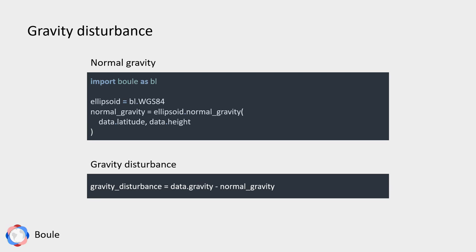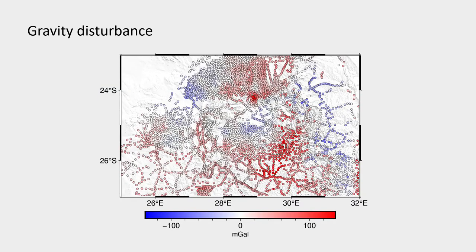The first step in this workflow is to compute the gravity disturbance. I need to first compute the normal gravity that the reference ellipsoid generates on every observation point. I can use Boule to define a WGS84 ellipsoid and use the normal gravity method to compute it on every observation point. Once I have the normal gravity, I can remove it from the observed gravity and obtain the gravity disturbance, shown in the plot here.